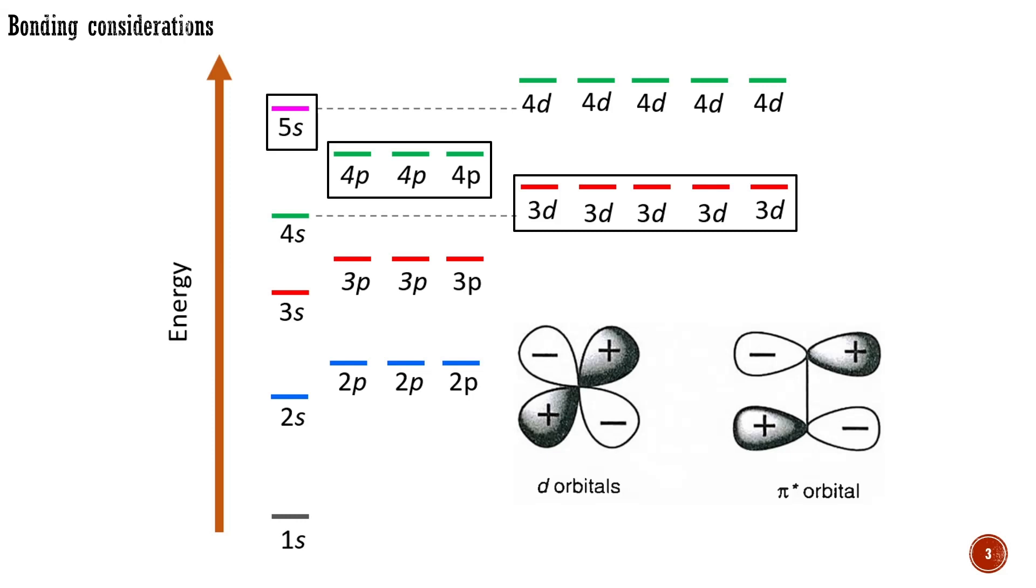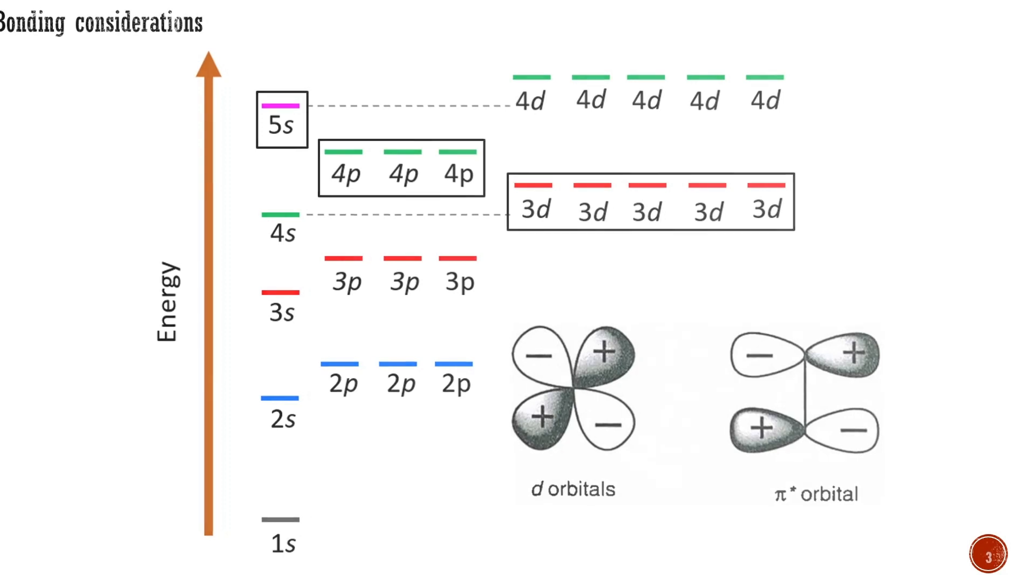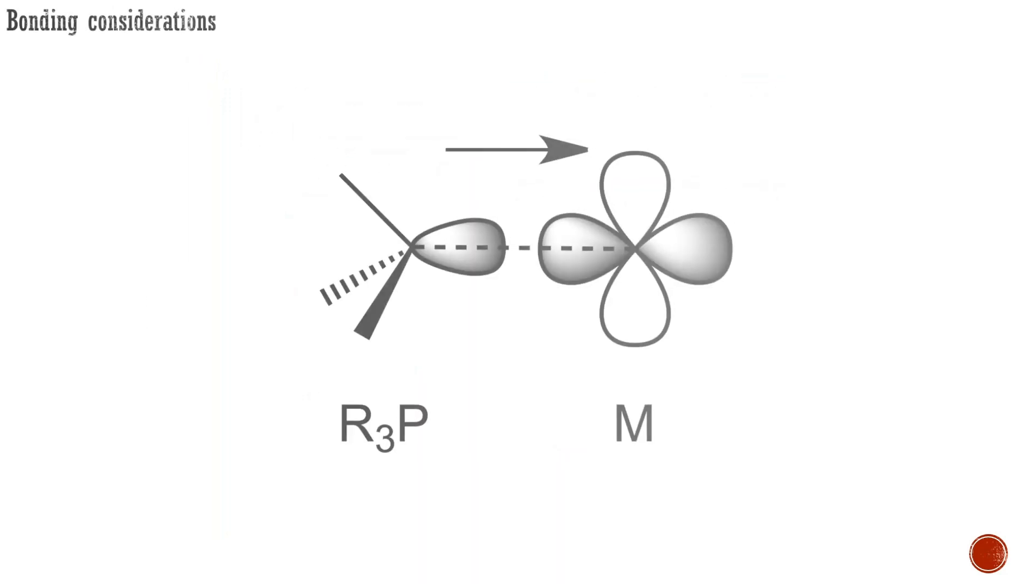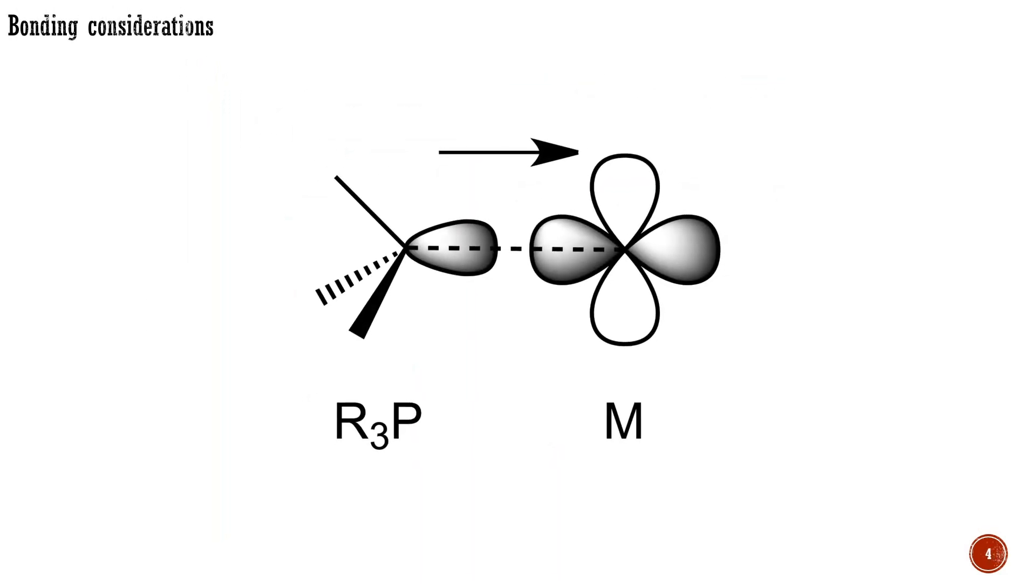Importantly, the d-orbitals on the metal have similar symmetry and energy to the ligands sp-hybrid orbitals. Most ligands are Lewis bases and thus typically neutral or anionic, rarely cationic.